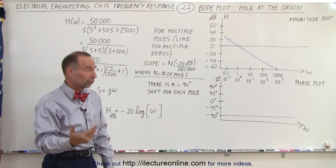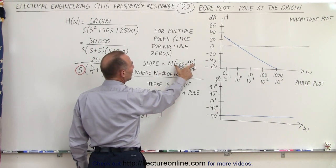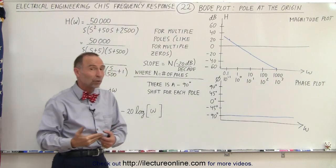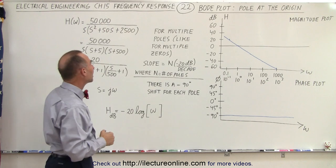What if we have two poles or three poles? Well, the slope is n times negative 20 dB per decade, where n is the number of poles. So if there's two poles or three poles, the slope would be minus 40 or minus 60 dB per decade.